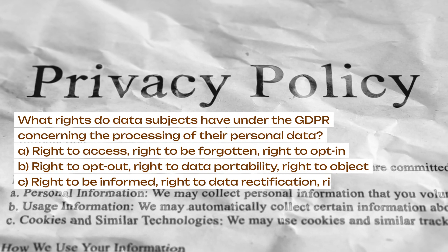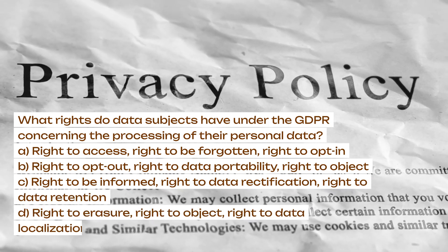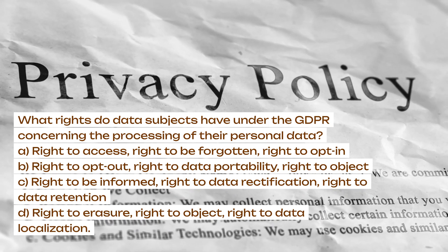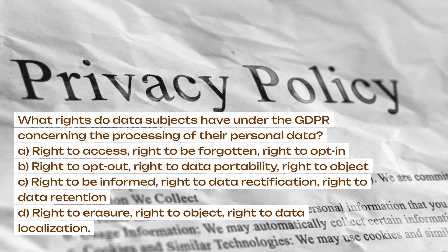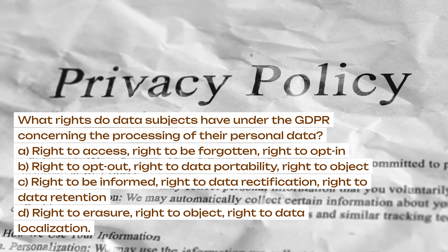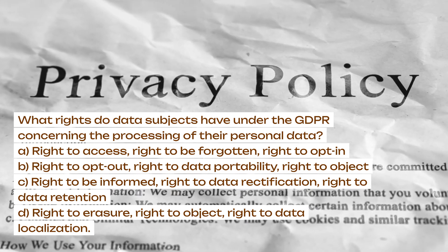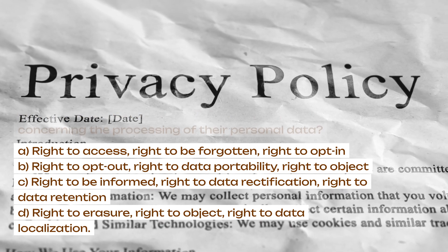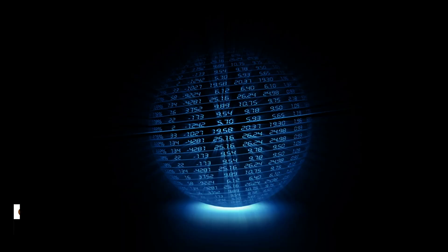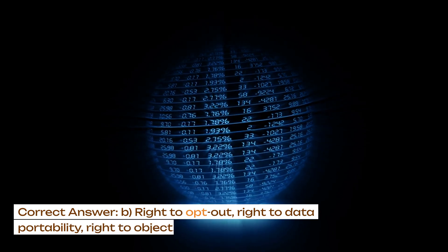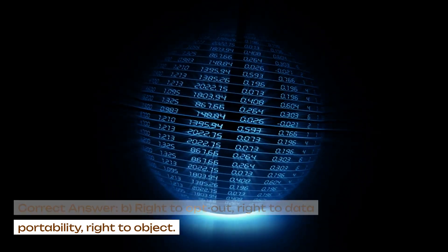What rights do data subjects have under the GDPR concerning the processing of their personal data? A. Right to access, right to be forgotten, right to opt-in. B. Right to opt-out, right to data portability, right to object. C. Right to be informed, right to data rectification, right to data retention. D. Right to erasure, right to object, right to data localization. Correct answer: B. Right to opt-out, right to data portability, right to object.